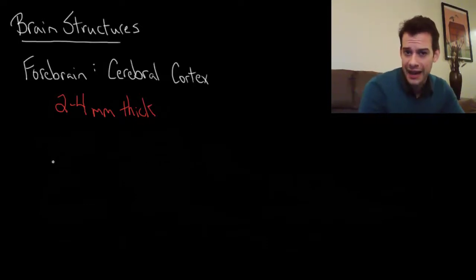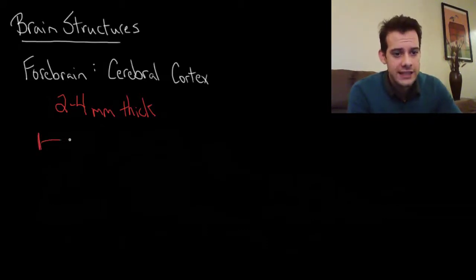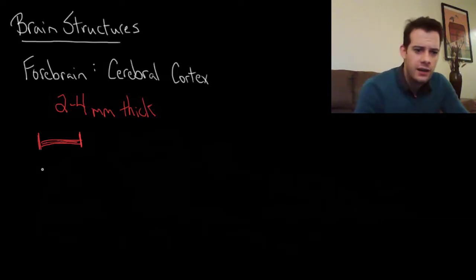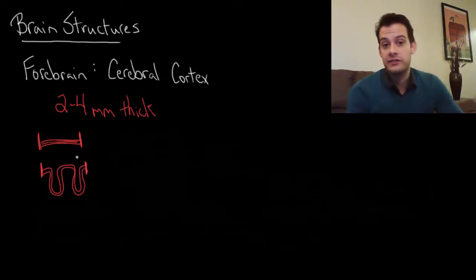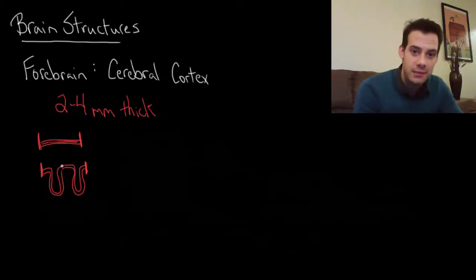The first question you might have when you look at the cortex is why is it wrinkled? Well, let's say we had some distance here that we were going to have this layer of cortex on. Now you can see if we had that same distance but we were allowed to wrinkle the cortex, you can see that we'd be able to fit a lot more cortex into the same space. And that is the answer to why the cortex is wrinkled.